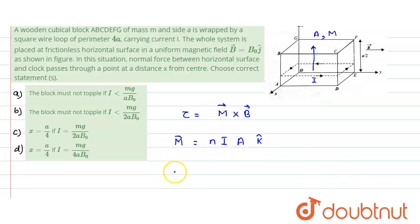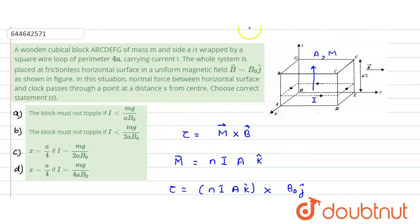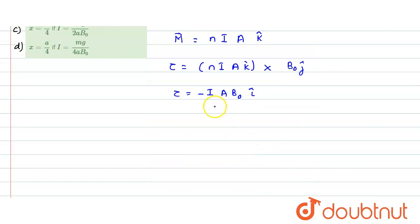Putting this into the torque expression: τ = n·i·A·k̂ cross B₀ĵ. Since there is only a single loop, τ = i·A·B₀ times (k̂ cross ĵ). Now k̂ cross ĵ equals −î, so τ = −i·A·B₀·î. The negative î direction indicates the whole object would be rotating about this axis — the body turns in this direction. The magnitude and direction of the torque are now determined.